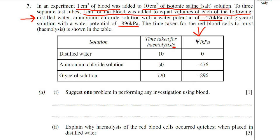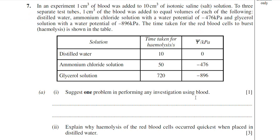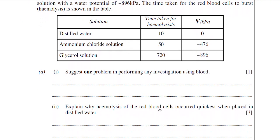Let's look at part A. The first question is a suggest question — that's the command word. Remember there's a separate video tutorial on command words. Suggest questions rely on you being able to state a common sense answer. So, suggest one problem in performing any investigation using blood. It's unlikely you've been taught about this, so you just have to use common sense. The most obvious problem when using blood is the possibility of infection.